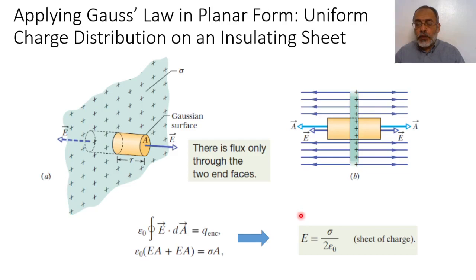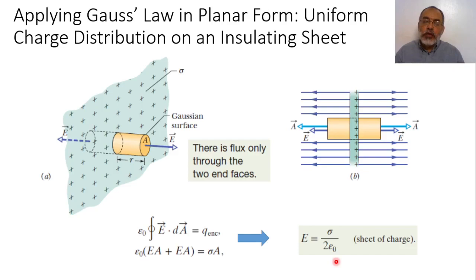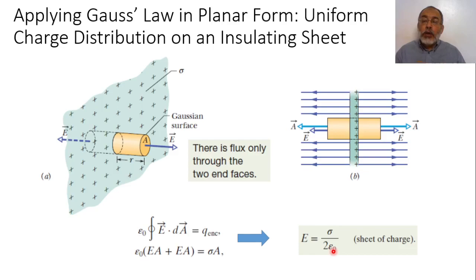Another interesting point: we have calculated this result before using the surface charge distribution on a circular disk, representing it as small concentric rings and integrating. We found that when the radius of the circular disk tends to infinity — the case of an infinite insulating sheet — the electric field is sigma over 2 epsilon naught. Using Gauss's law avoids the complicated integrations required by Coulomb's law, demonstrating the advantage of Gauss's law for complicated structures.